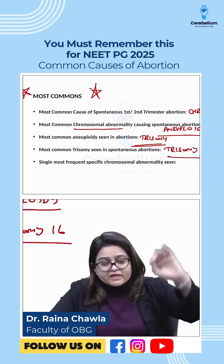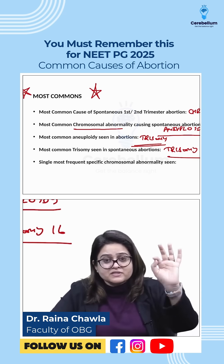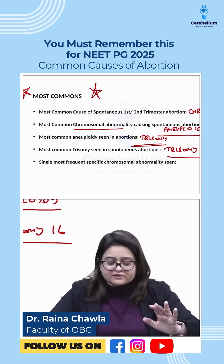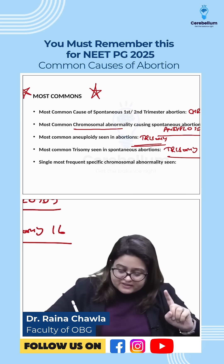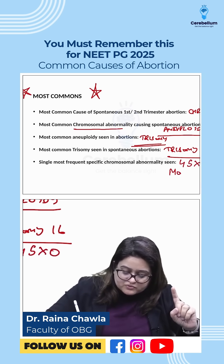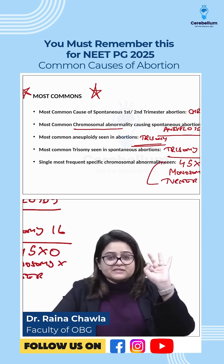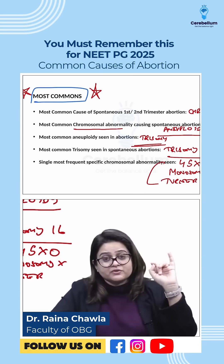If you ask the most common trisomy, the answer is trisomy 16. But if you are asked the single most specific, most frequent specific abnormality, then the answer is 45XO, or Monosomy X, or Turner Syndrome — all are the same. Remember this slide; it is very, very important.